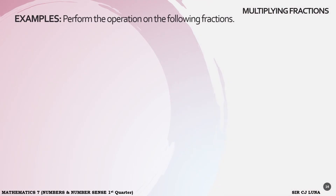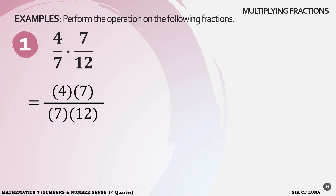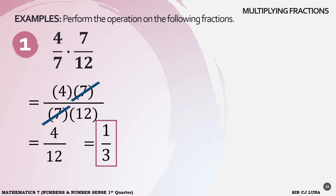Let's now perform multiplication on the following fractions. Example number 1: 4 over 7 times 7 over 12. Multiply the numerators, 4 times 7, over the product of the denominators, 7 times 12. From here, we can see that we have the same factors, so we can use cancellation. We can cancel 7 and 7. So we only have now 4 over 12. But 4 over 12 can still be simplified by 3. So our answer now is 1 over 3.